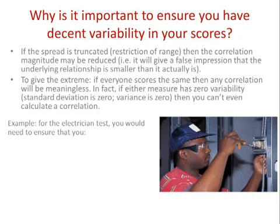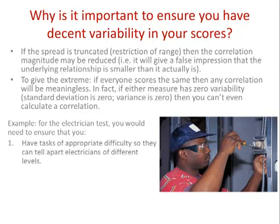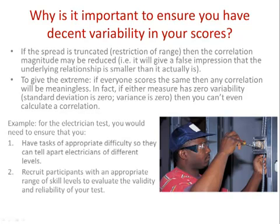For the electrician example, two things you've got to bear in mind. First, when you create the tasks, make sure they're of an appropriate level of difficulty so that some people can do them and some can't — you end up with a decent range of quality of work. The whole point is to create tasks that allow you to tell apart electricians of different levels. Second, when you test this, recruit participants with an appropriate spread of skills so you can test both ends of your scale. Getting that good spread of scores will allow you to come up with decent correlations to assess the validity and reliability of your test.